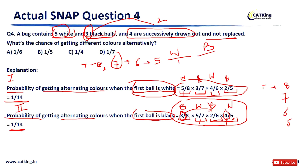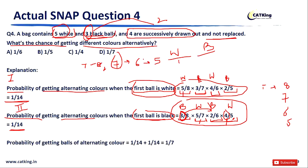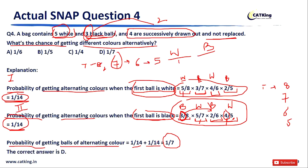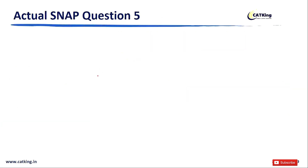The question asks for the probability of getting balls of alternating colors, which is the sum of Case 1 and Case 2: 1/14 + 1/14 = 1/7. Hence the correct answer is Option D: 1/7.